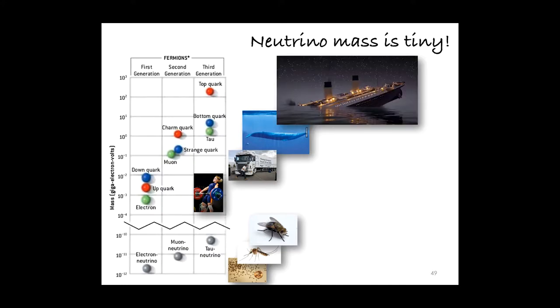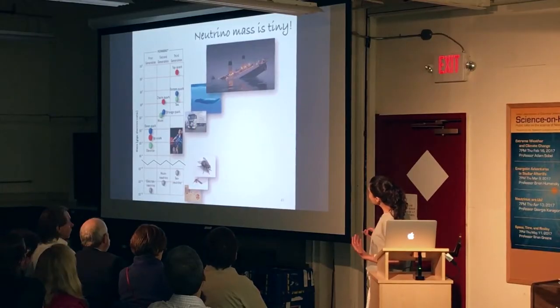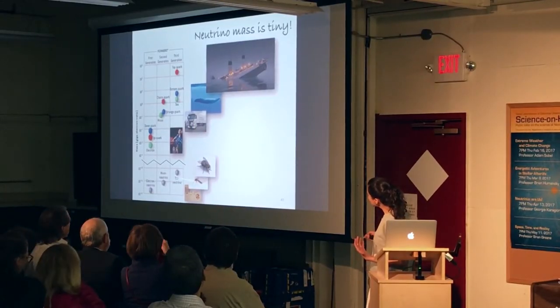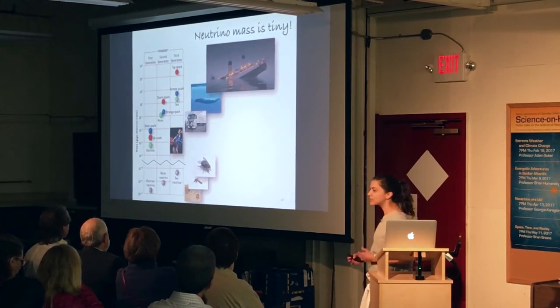And the top quark, which is also a fundamental particle of matter, would weigh as much as the Titanic. So all of these particles — the quarks, the electrons, muons, taus, and the neutrinos — are all fundamental blocks of matter. We think that all of them receive their masses through the same mechanism, called the Higgs mechanism. So the fact that the same mechanism would attribute such vastly different masses to neutrinos and not the other particles is a big question mark.